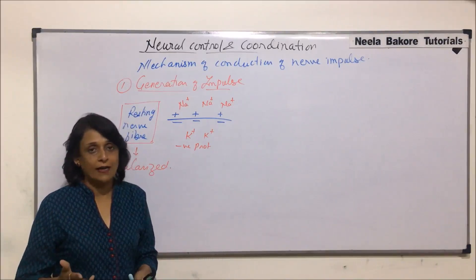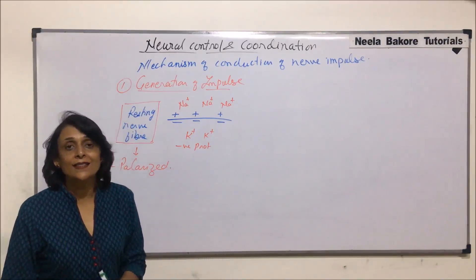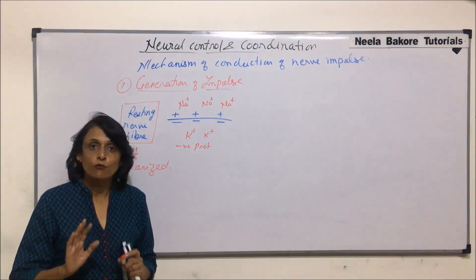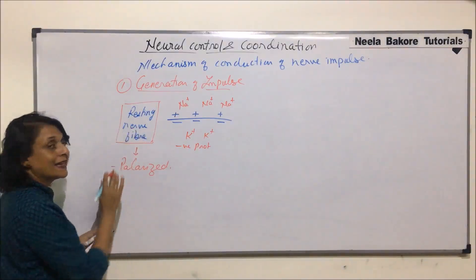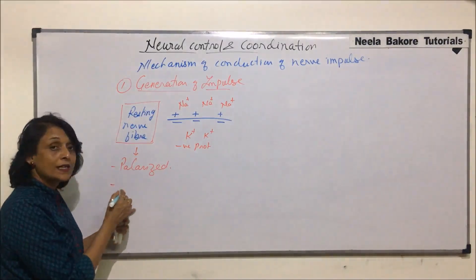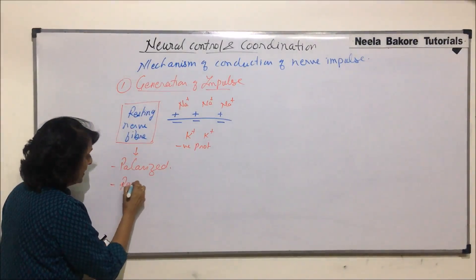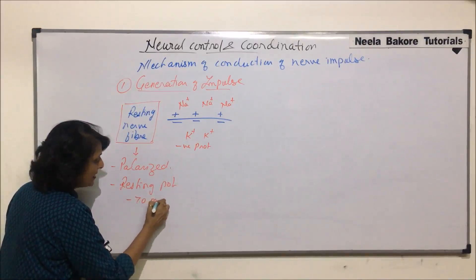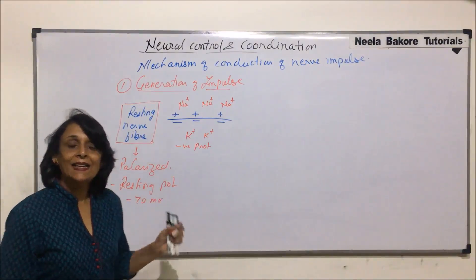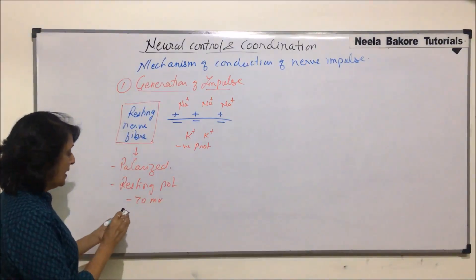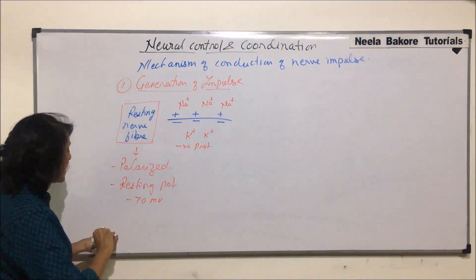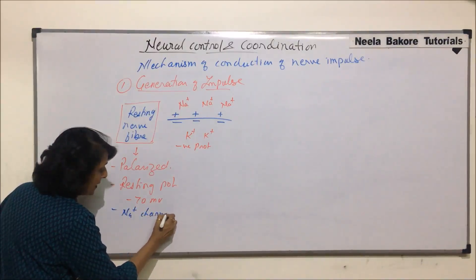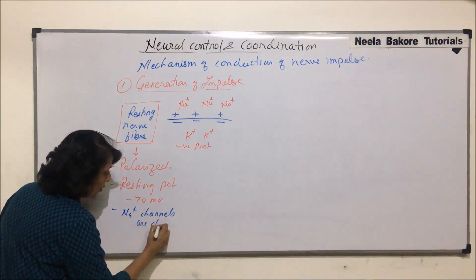The channels — sodium channels, potassium channels, calcium channels, and chloride channels — are actually proteins which operate at certain voltages. At the resting stage, we know the resting potential is minus 70 millivolts. At this potential, the sodium channels are closed.